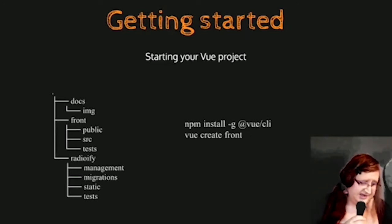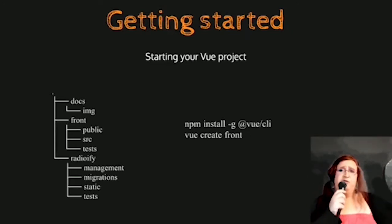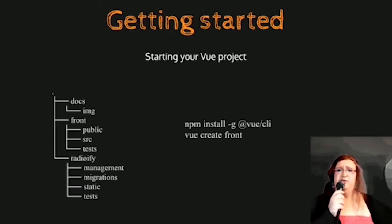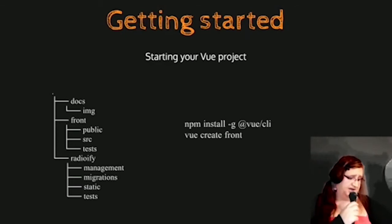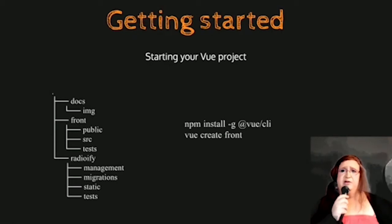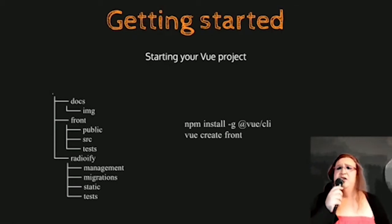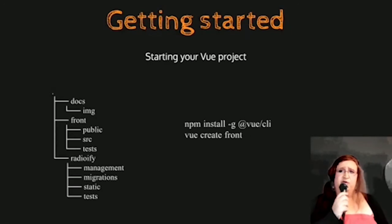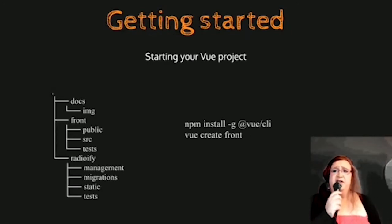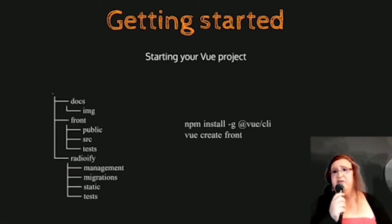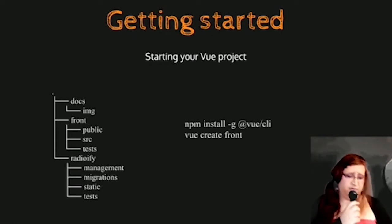And this is what I got. In the front directory, you can see there are three directories: source, test, and public. Public is for any resources like images and things like that. Source is where the main code will be. And test, of course, is for tests.